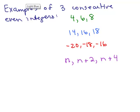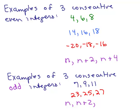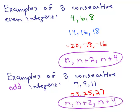Now for three consecutive odd integers, examples are 7, 9, and 11, or 23, 25, 27. If the first odd integer is n, you can't add 1 because you'd land on an even integer. You have to add 2 to get the next odd integer, and add 2 again for the one after that. So whether you're talking about consecutive even or odd integers, they're both defined as n, n plus 2, and n plus 4 for three in a row. We'll work on problems with those in another video.